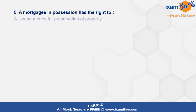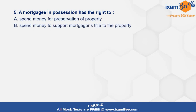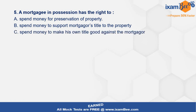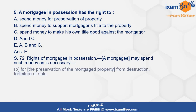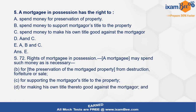Question 4: A mortgagee in possession has a right to — A) spend money for preservation of property; B) spend money to support mortgage title to the property; C) spend money to make his own title good against the mortgager; D) A and C; E) all of the above. This is an easy question. Rights of mortgagee in possession are covered under Section 72 of the TPA, and all the rights mentioned are included.